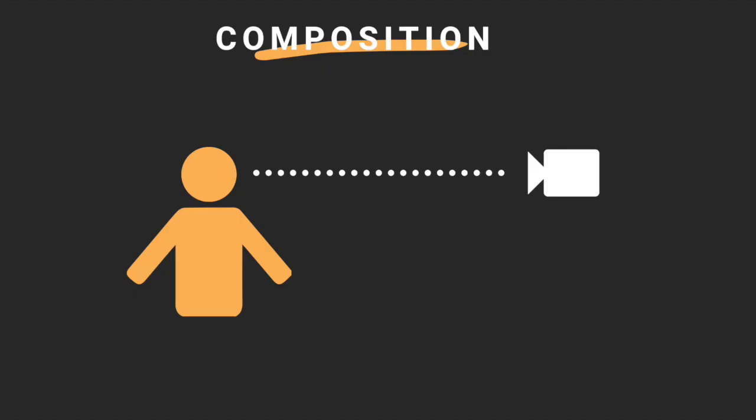Lastly, composition. This is just how the subjects in your video are placed within the frame. Again, for a cinematic look, you want to mimic the natural eye level. To do this, you should place your subject's eye line in line with the camera lens. The best thing to do to accomplish this is to use a tripod.